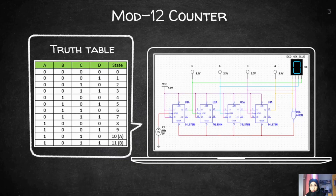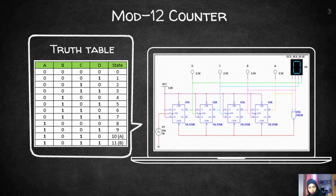Next is the mode 12 counter. This is the circuit that I have run the simulation in Multisim, and this is the truth table for mode 12. I use four flip-flops because it is for the mode 12 counter, which has 12 states. As written in the truth table, the states are 0, 1, 2, 3, 4, 5, 6, 7, 8, 9, 10, and 11.